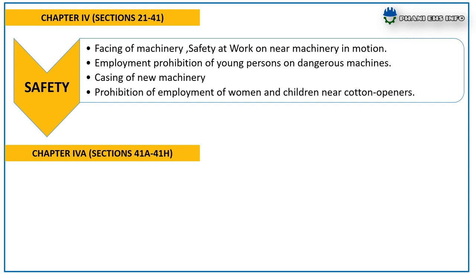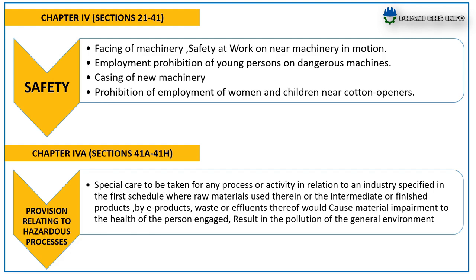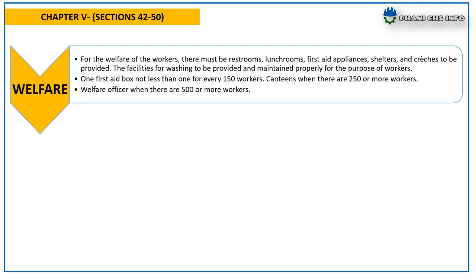Chapter 4A covers provisions relating to hazardous processes, which includes sections 41A to 41H. Special care is to be taken for any process or activity in relation to an industry specified in the First Schedule where raw materials used, or intermediate or finishing products, by-products, waste, or effluents thereof would cause material impairment to the health of persons engaged, or result in the pollution of the general environment.